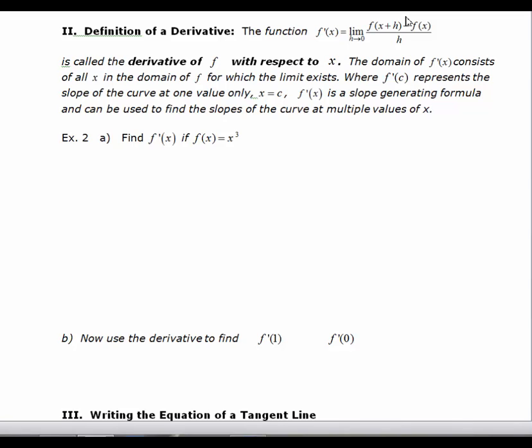The domain of this function consists of all x in the domain of the original function f for which this limit exists. Where f prime of c represents the slope of the curve at one value only, f prime of x is a slope-generating formula and can be used to find the slopes of a curve at multiple values of x. There are times when all we need to do is find the derivative at one value, but if you want to evaluate a function in more than one place, it is better to find the formula. So we'll start off by writing the definition of a derivative.